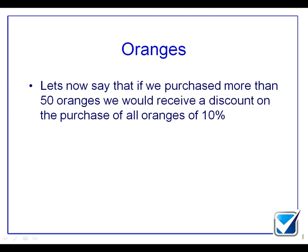Now what's going to happen is we're going to say that if you purchase more than 50 oranges, you receive a discount on the purchases of your oranges of 10%. That now equates to a discount on your variable cost per unit of 10%. Now the 10% discount that we're going to get here will be applicable to all oranges.